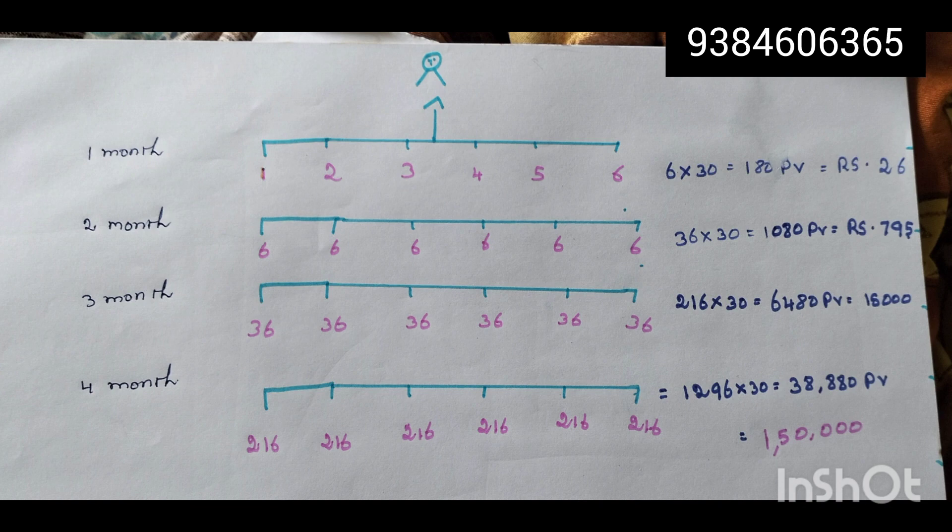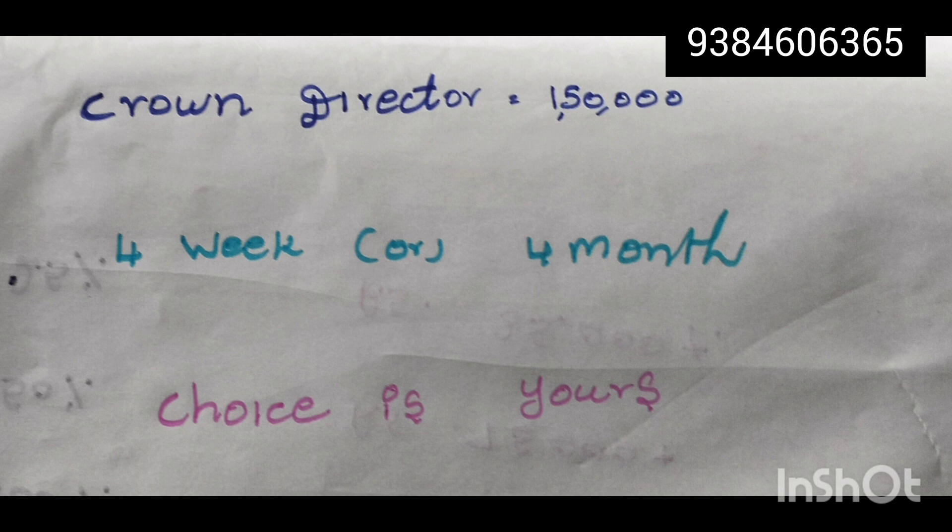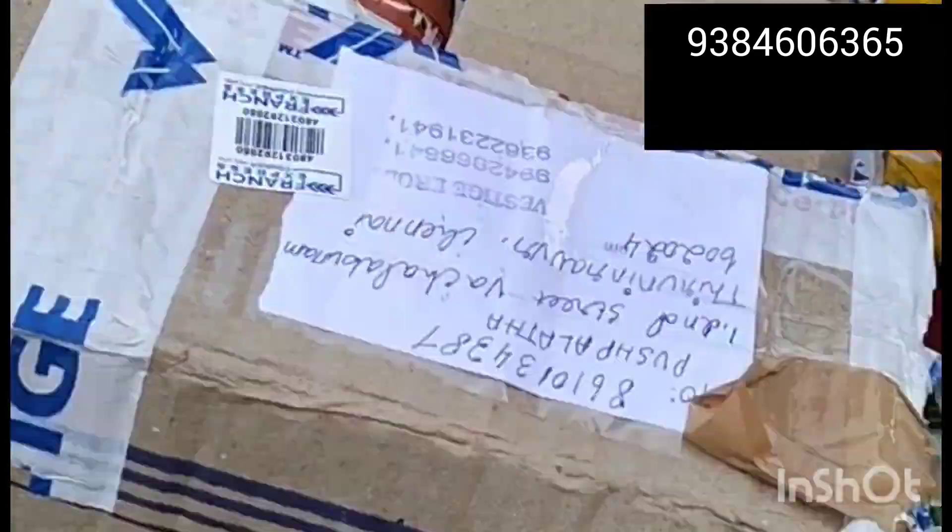The Crown Direct will decide for 4 weeks or 4 months. If you want to do this, please message us on the screen. Thank you for watching.